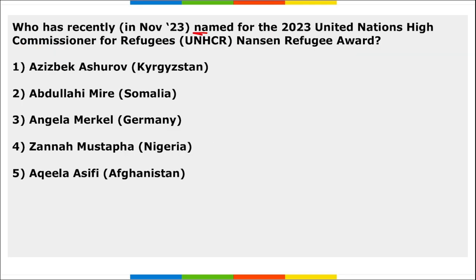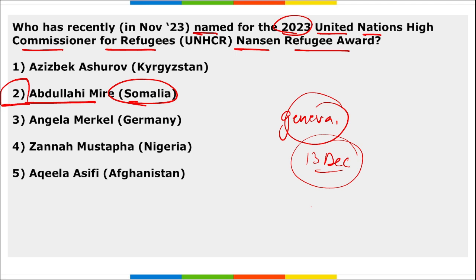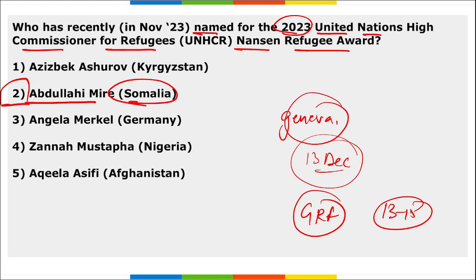Next: who has been recently named for the 2023 United Nations High Commissioner for Refugees Nansen Refugee Award? It is Abdullah Mireh of Somalia. This award will be presented at a ceremony in Geneva, Switzerland on 13th December, during a global refugee forum from 13th to 15th December. He will be honored for his outstanding work with refugees, internally displaced, and stateless people.